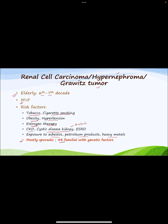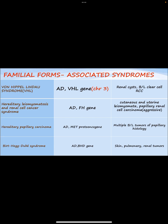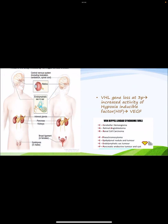The four percent familial forms are associated with various genetic factors and syndromes, which are important for PG entrance exams. The first is von Hippel-Lindau syndrome, associated with deletions in chromosome number 3 harboring the VHL gene. It is an autosomal dominant disorder associated with renal cysts and bilateral renal cell carcinoma.